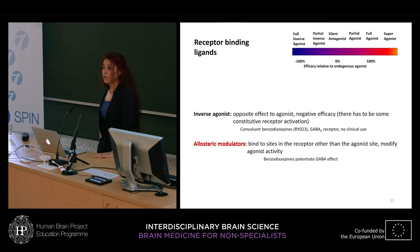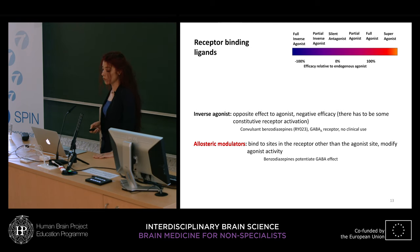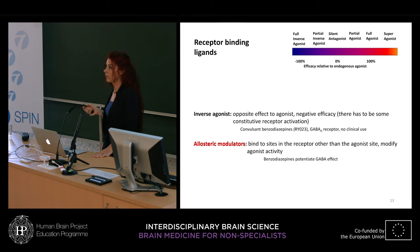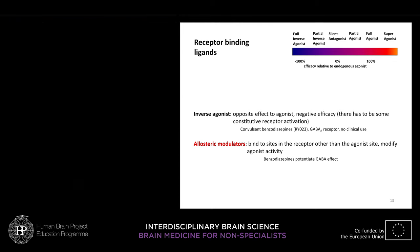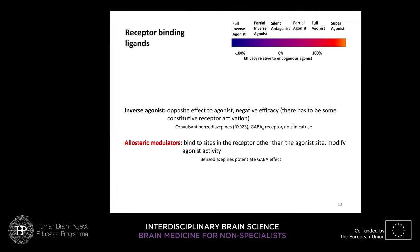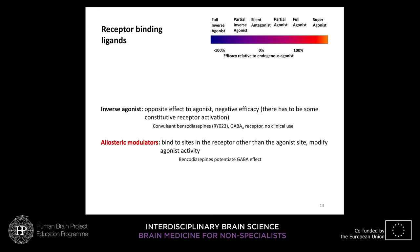There are two more kinds of ligands. Inverse agonists have the opposite effect to agonists, producing negative efficacy — this requires some constitutive activation of the receptor. This is the case of convulsant benzodiazepines that bind to the GABA-A receptor, though they have no clinical use because they are convulsant. Allosteric modulators bind to sites in the receptor other than the agonist site and modify agonist activity — for example, the benzodiazepines.